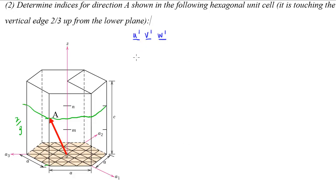This is a problem looking for a direction of a particular vector in a hexagonal close-packed cell. It goes from the origin in the middle of the bottom plane up two-thirds right on the edge here. We want to first put it down in three parameters — U', V', and W' — and then translate it into the four-parameter Miller-Bravais system.